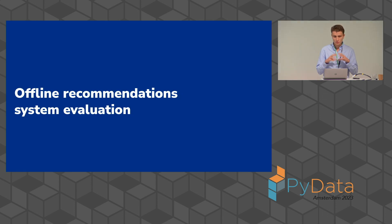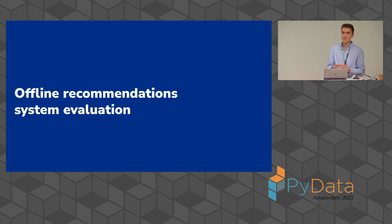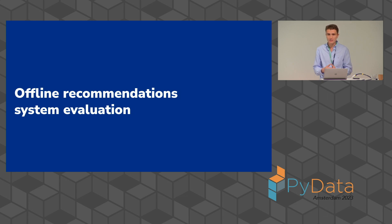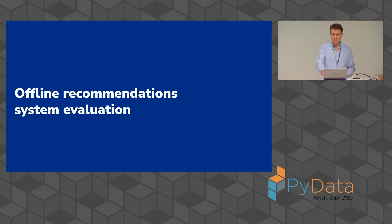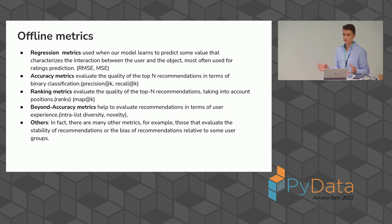Why am I talking about this? We can notice that recommendation systems, compared to classical machine learning, can be very complex. This means we have a gap between offline and online metrics, and we need to be careful with the evaluation of these systems. The question is: how do we do these evaluations right? In recommendation systems, we can measure different offline metrics.